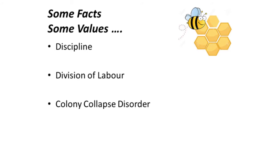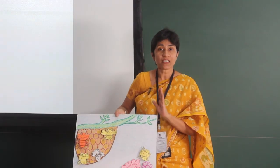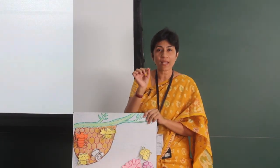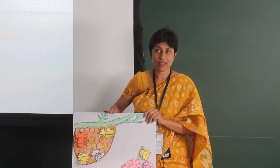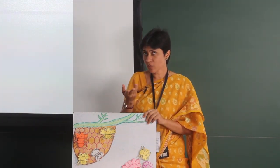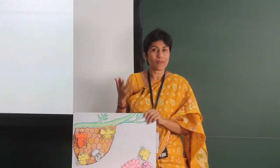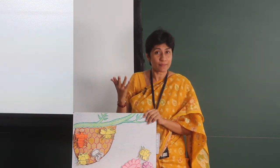When this topic is taught, I try to stress upon two very important attributes shown by these bees: discipline and division of labour. These allow honey bees to maintain such a complex structure as a beehive. Because values are caught and never taught, I try to communicate: if you have discipline, you too can manage complex things and do big things. Discipline is a very important quality worth imbibing.